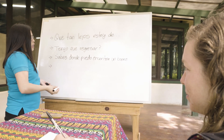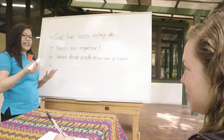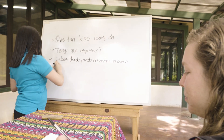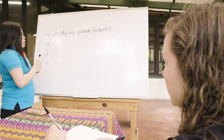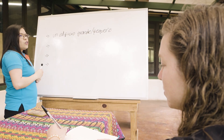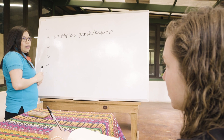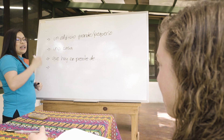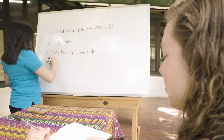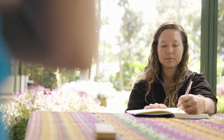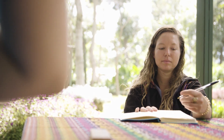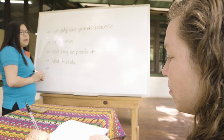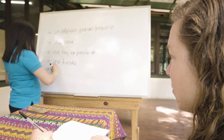¿Hay una marca específica o una señal específica? A building — un edificio, una casa que hay enfrente, or a store — una tienda, a place that is called — un lugar que se llama.